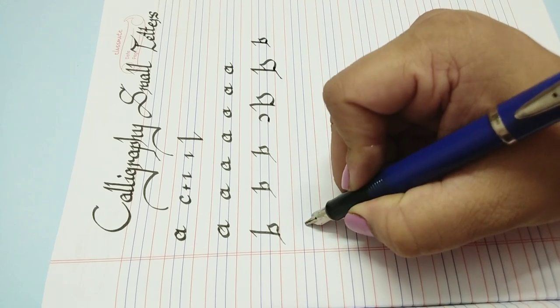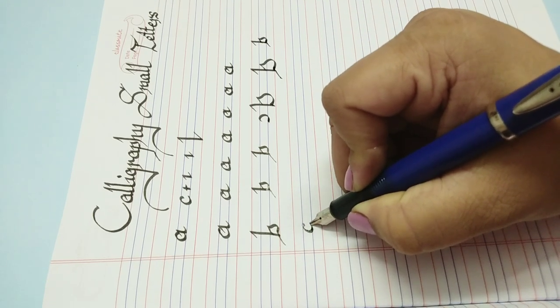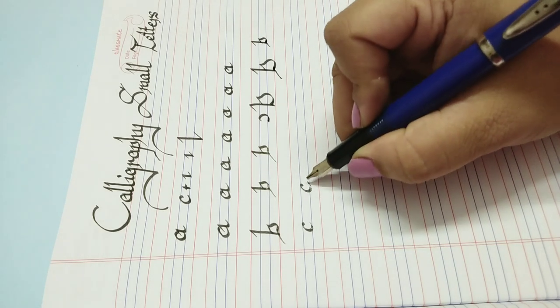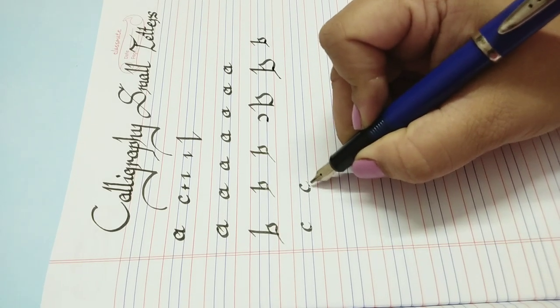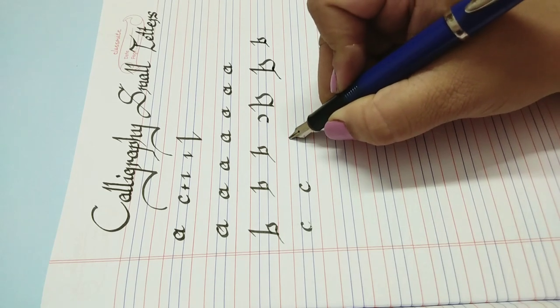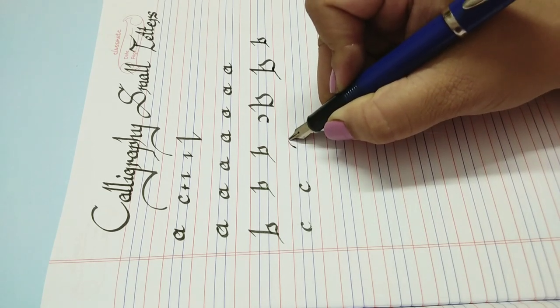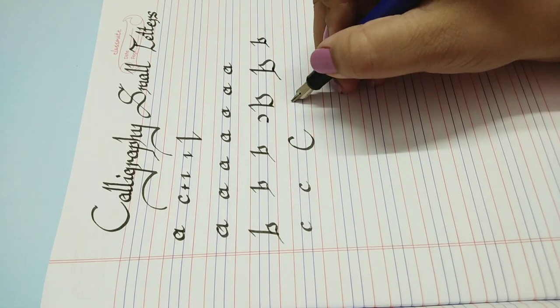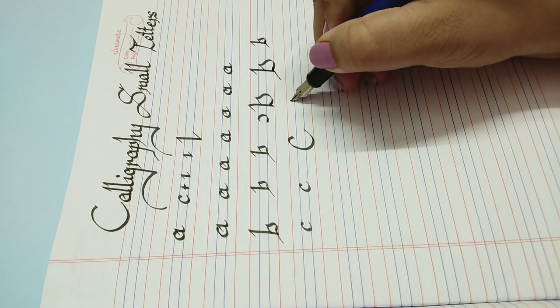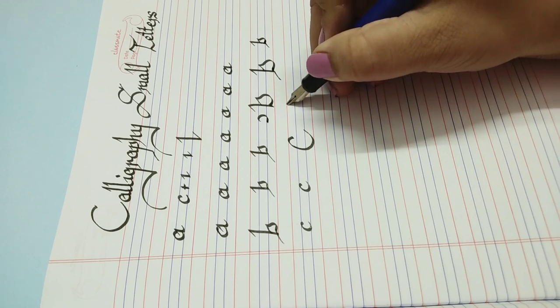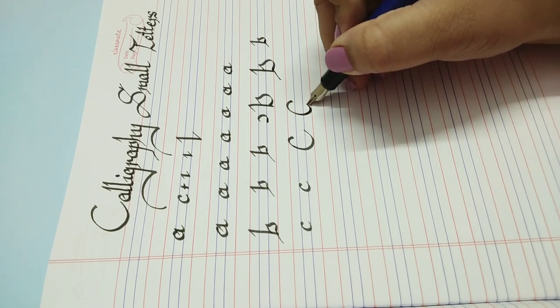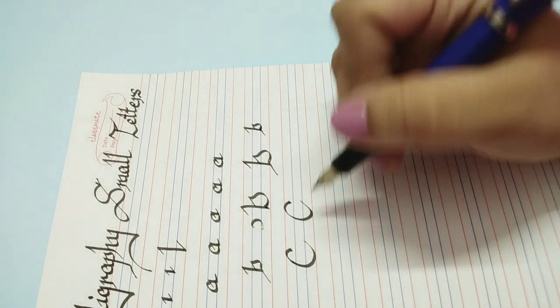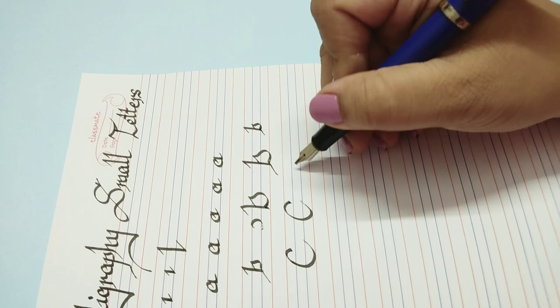C is really simple, it's just this. The only thing which we have to make sure is the starting should be a little flat and the end should be little sharp. So if I make a bigger one, you have to put your nib flat on the surface, drag it, and then leave it to a sharper end. A smaller C would be like this.